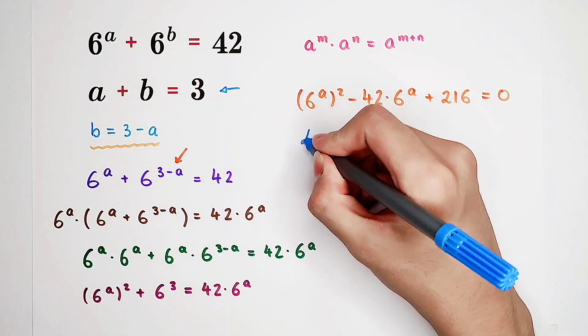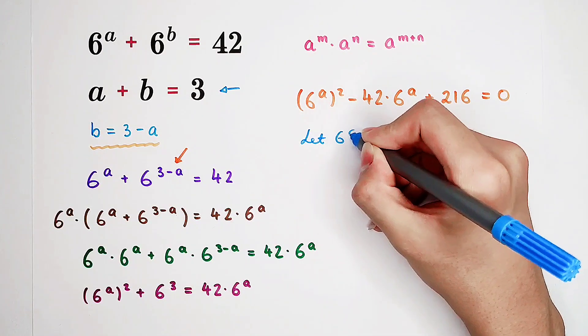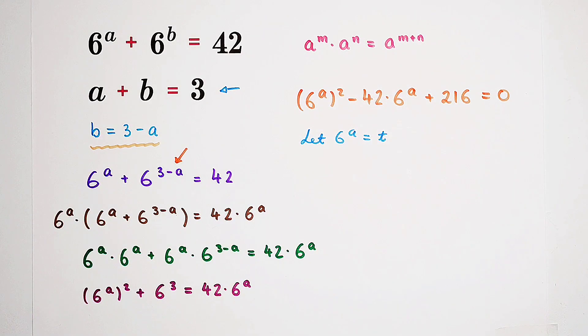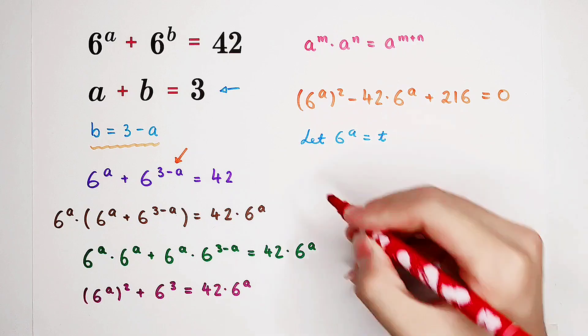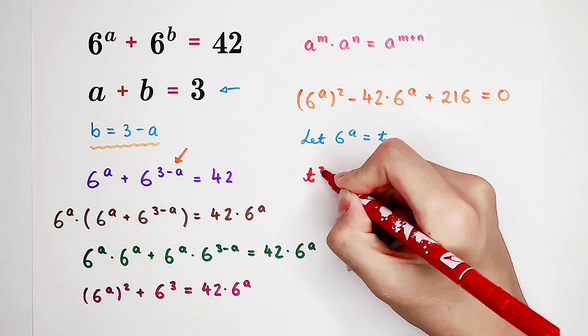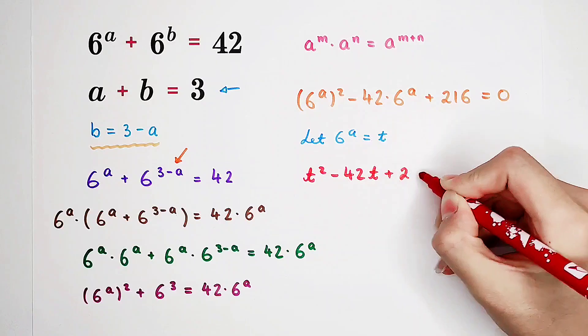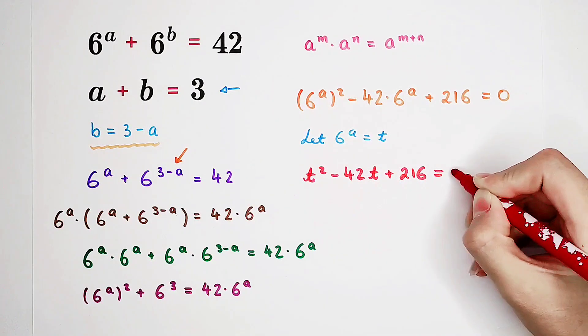If we substitute, we can let 6 to the power of A be T, for example. Then, the equation will turn to this form. An equation about T. T squared minus 42T plus 216 equals 0. So, what does it mean? So, now we only have to solve for T.